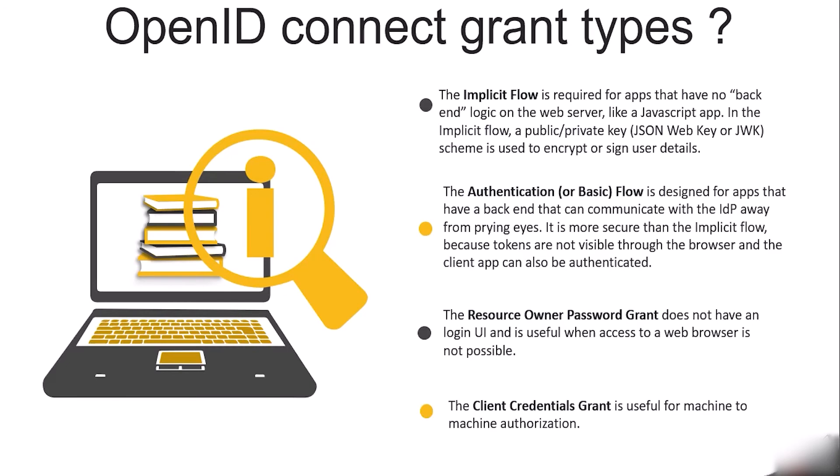OpenID Connect grant types: The implicit flow is required for apps that have no backend logic on the web server, like JavaScript apps. A public-private key JSON Web Key (JWK) scheme is used to encrypt or sign user details. The authorization code flow is designed for apps that have a backend that can communicate with the identity provider — it is more secure because tokens are not visible through the browser. The resource owner password grant has no login UI and is useful when web browser access is not possible. The client credentials grant is useful for machine-to-machine authorization.